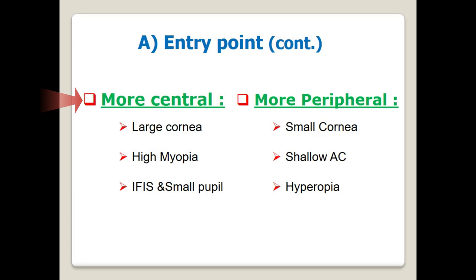A more central incision is required in large corneas and high myopic eyes for easier phaco-tip manipulation. Central wounds are also needed in small pupils and in IFAS cases to prevent iris prolapse during surgery. Conversely, a peripheral incision is preferred in eyes with small corneas, shallow anterior chambers, and hyperopic eyes, as this minimizes surgically induced astigmatism.